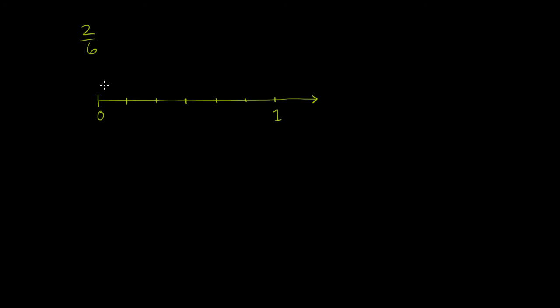Let's think about where we would plot 2 sixths on this number line. So let's count what each of these little marks represent.